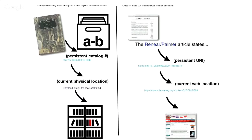The mechanism DOIs use is not technically fancy — it's more a socially difficult problem to solve. DOIs work very much like a card catalog. In the old days, a card catalog wouldn't tell you a book was on the third floor, fifth shelf — it would give you a call number, and call numbers were mapped to physical locations. That meant if they rearranged the library or reshelved books, they didn't have to update the card catalog; they could just change the mapping.